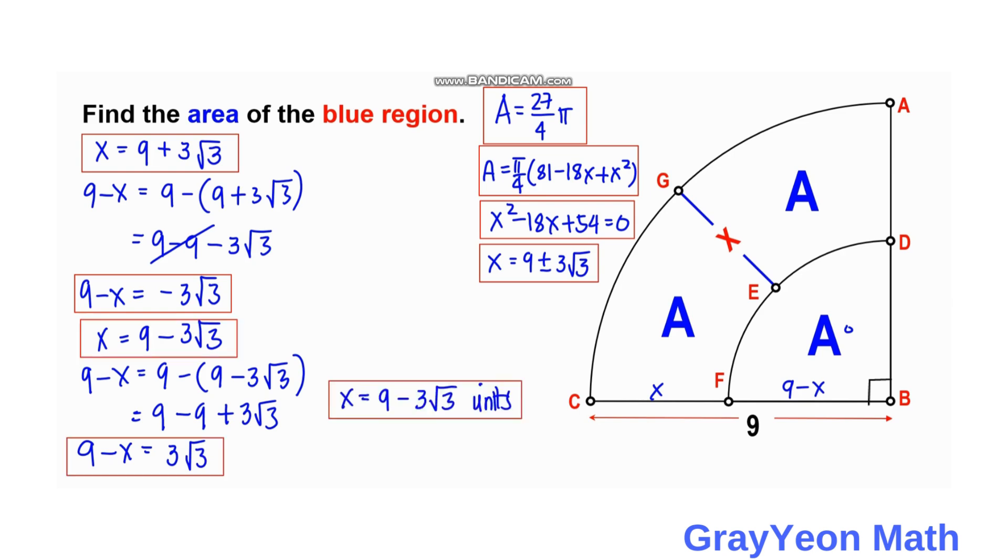So judging from the value, the value of X being 9 plus square root of 3 gives us a value of 9 minus X, a negative 3 square root of 3 for 9 minus X. So this answer is invalid because its corresponding pair becomes a negative, the 9 minus X. And since 9 minus X is also a distance and could not be negative, then this is actually invalid.